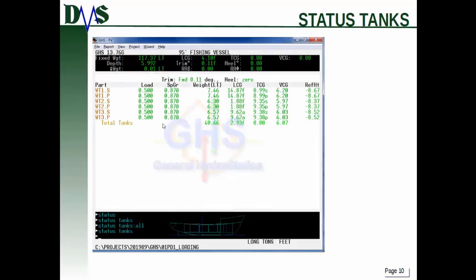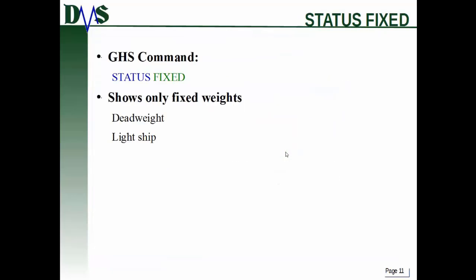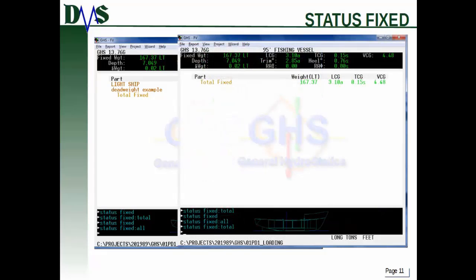Here's an example: with 'status tanks' we're only showing the tanks that have items in them - notice there's no tank with a load of zero. With 'status tanks:brief' we get that summary. For 'status fixed', that shows only the fixed weights - the lightship and the deadweight, the solid objects. You can also do 'status fixed:total', and instead of giving you each individual item it just gives you the total.